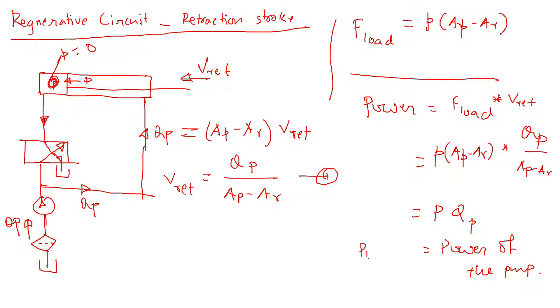We found a similar result for the extension stroke. Now there is another relationship typically developed for the retraction circuit: the velocity ratio between extension and retraction velocity, which is basically if you divide the extension velocity by the retraction velocity.